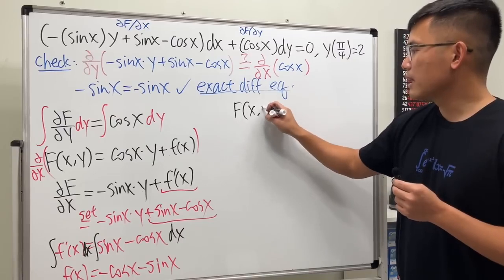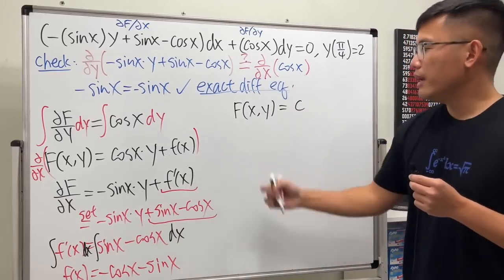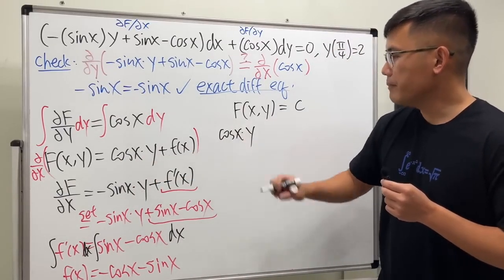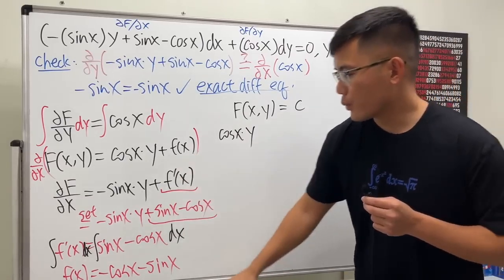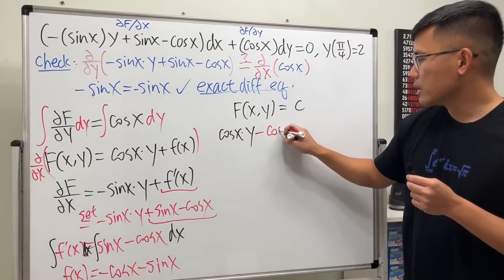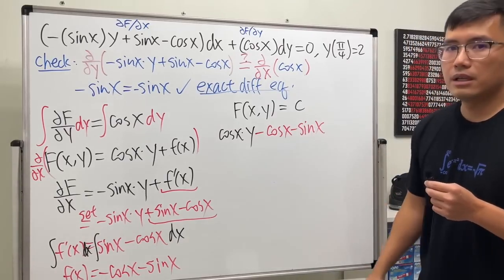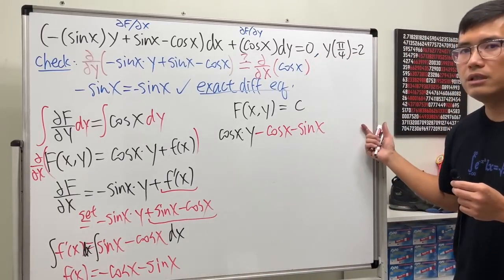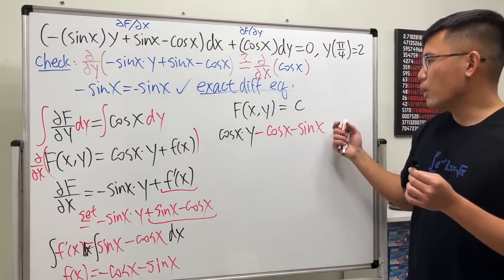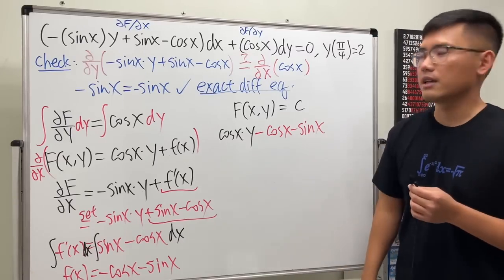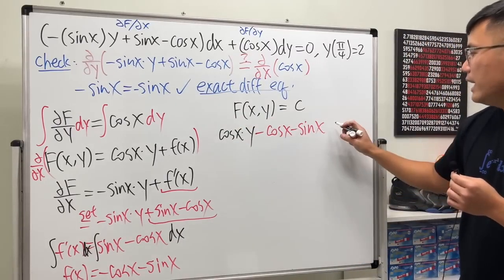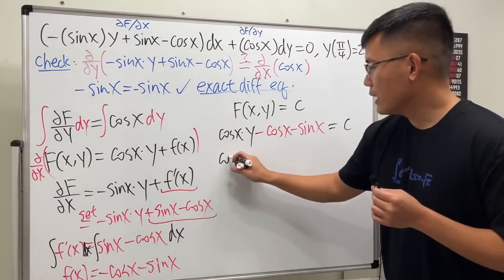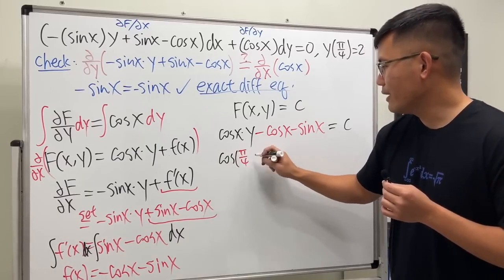You do not need a plus c here because we add it in the final answer. The final answer is in the form F of x comma y equals a constant. The function part is cosine x times y, plus f of x which is negative cosine x minus sine x, and this equals c.